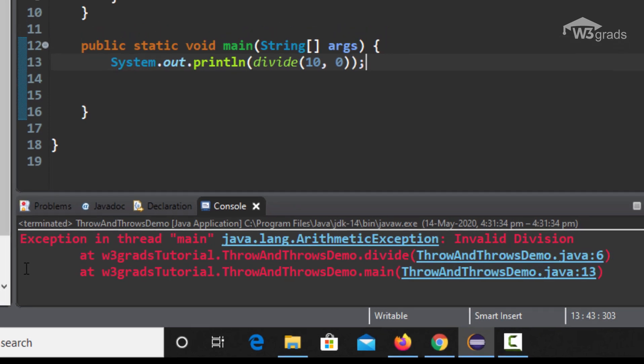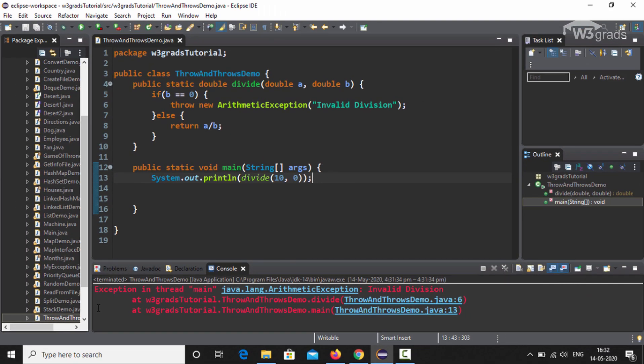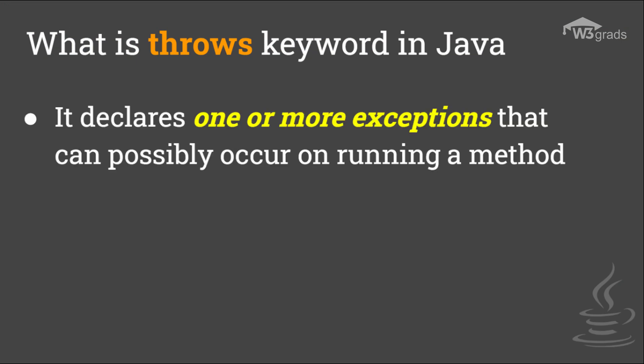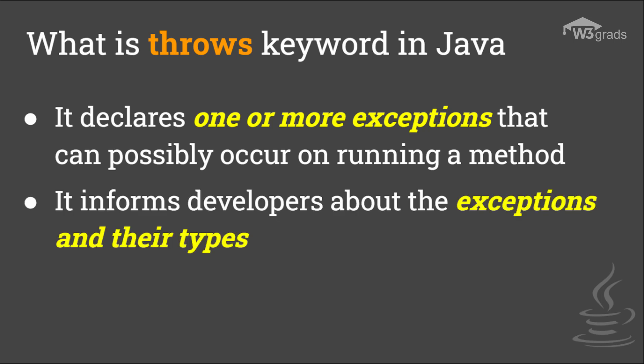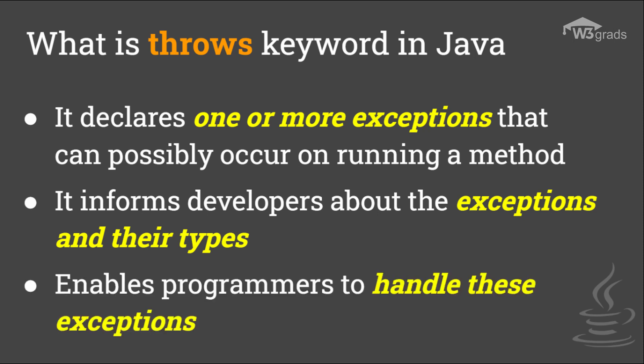This is how the throw keyword works. Now let's take a look at the throws keyword. The Java throws keyword is used to declare an exception, or a list of exceptions, that may occur during method execution. It provides information to the programmer about the occurrence and type of exception so that the programmer can handle it using exception handling mechanisms, ensuring the normal flow of the program can be maintained.